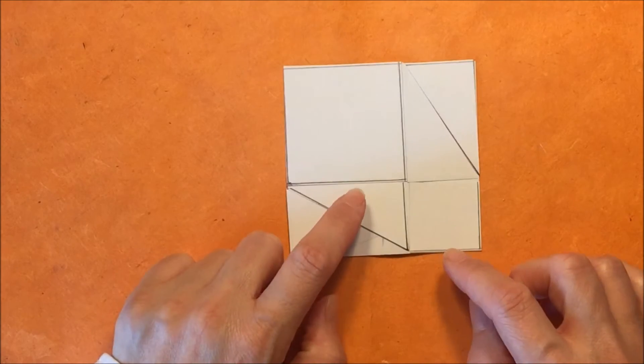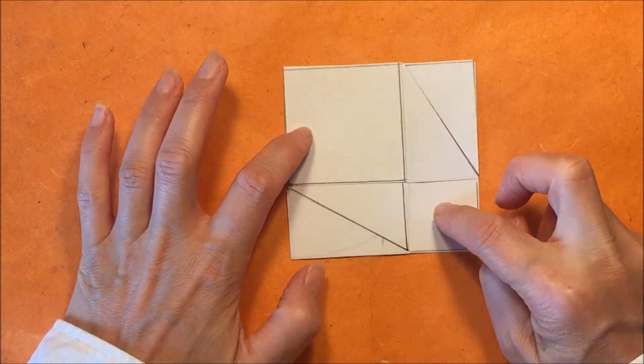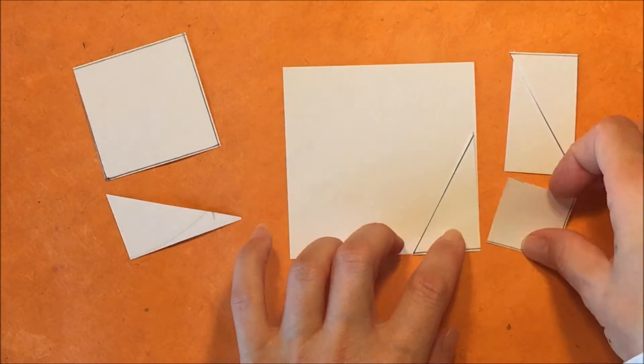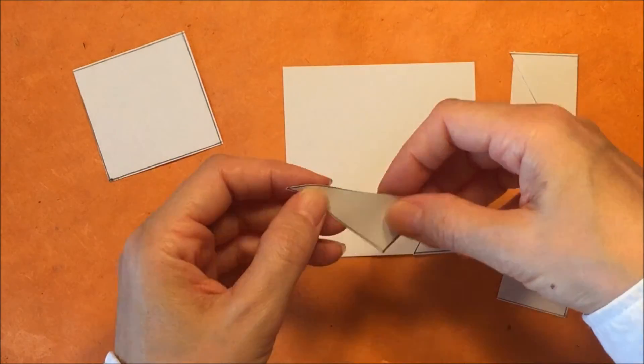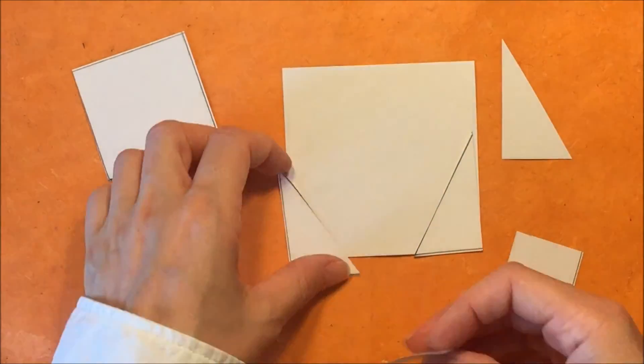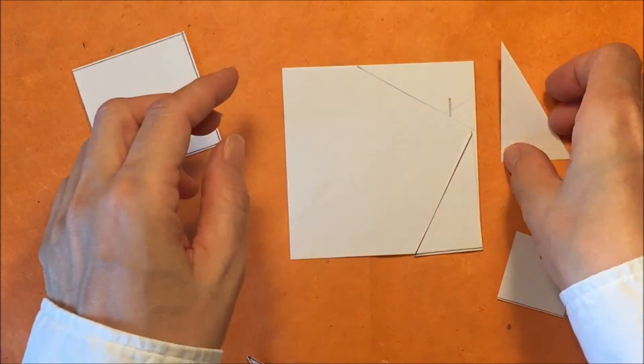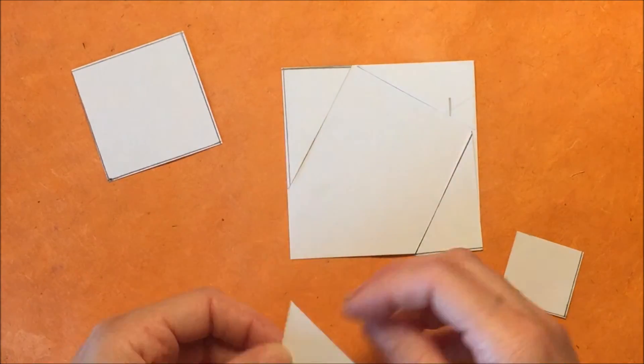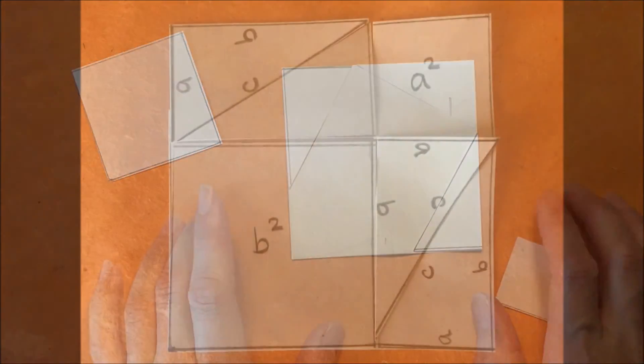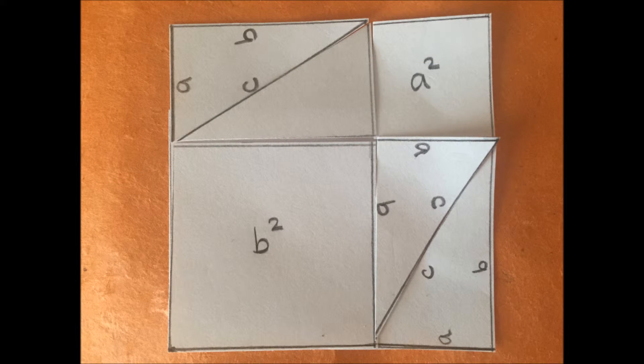And now let's shift it around one more time and reposition those triangles around the outside edge. And in case you're wondering why there are four triangles, we just want to make sure that we're covering the same area within that square in the background. So there we have it: a squared plus b squared equals c squared.